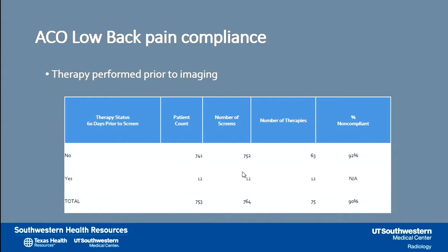To reiterate this point, this is actual data from an anonymous ACO that looked at what proportion of patients actually underwent or were offered conservative therapy prior to engaging in lumbar spine imaging. You'll notice that in 90% of cases they were non-compliant — they were offered imaging prior to any conservative therapy. The bottom line here is that we certainly can do better.